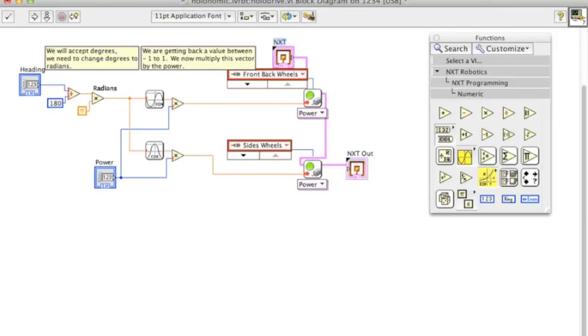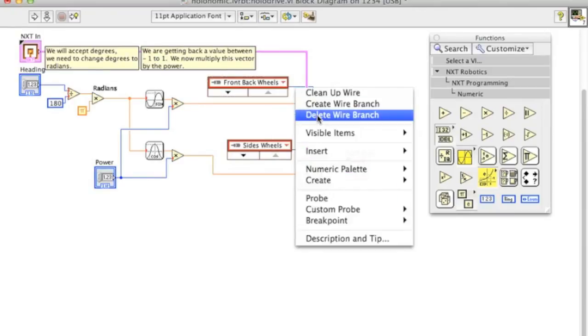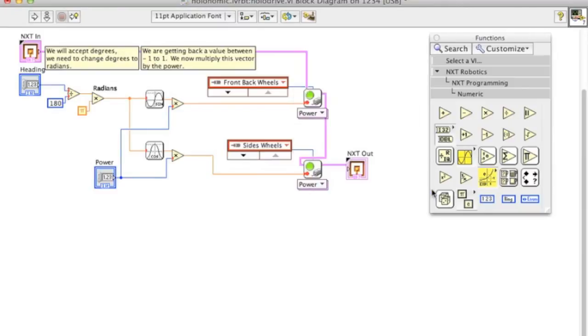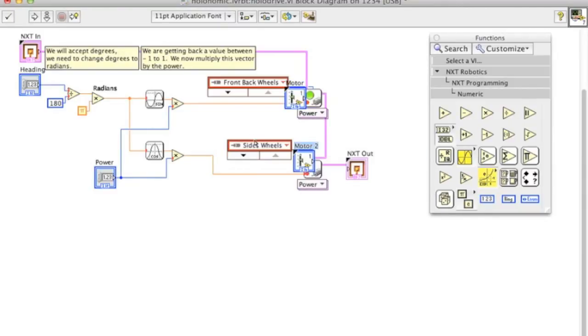If you want, you can also create an input and output of the pink NXT wires. And then finally, you're going to want to turn the motor information into controls as well. What you need to do is right click on the wire and create a control. You can't convert the constants into controls.